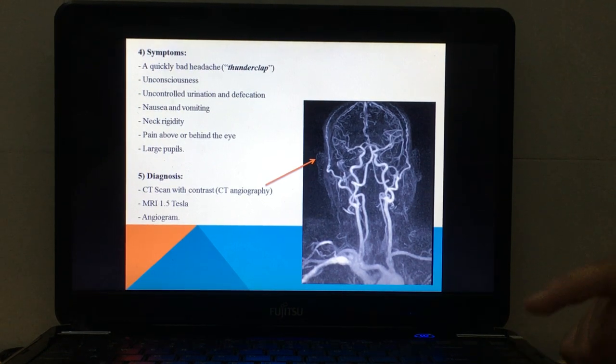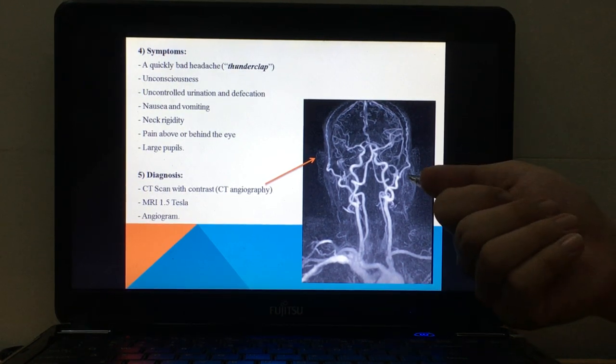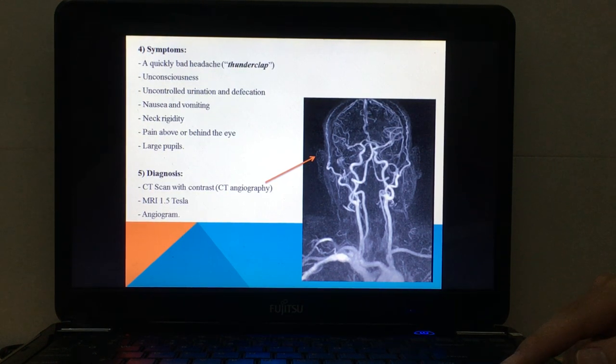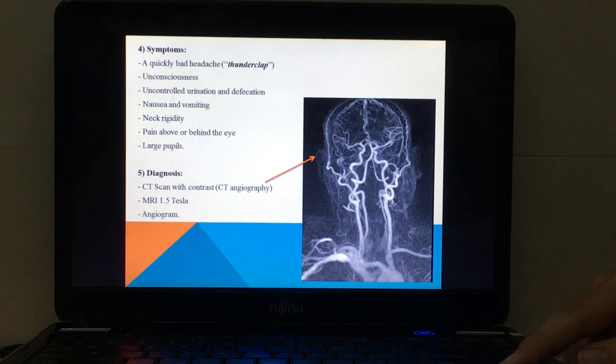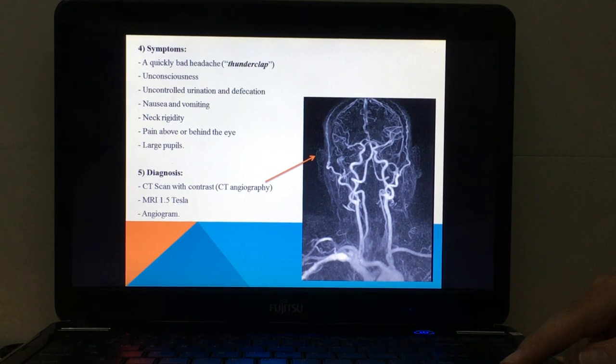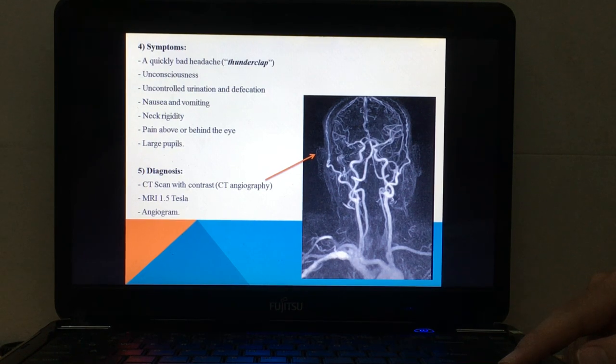About diagnosis: we can use CT scan with contrast, or we can call it CT angiography, like this picture. If we don't use contrast, we can't see the aneurysm. We can use an MRI, 1.5 Tesla. 1.5 Tesla is enough, we don't need to use MRI 3 Tesla for coronary artery disease. And we can use an angiogram.